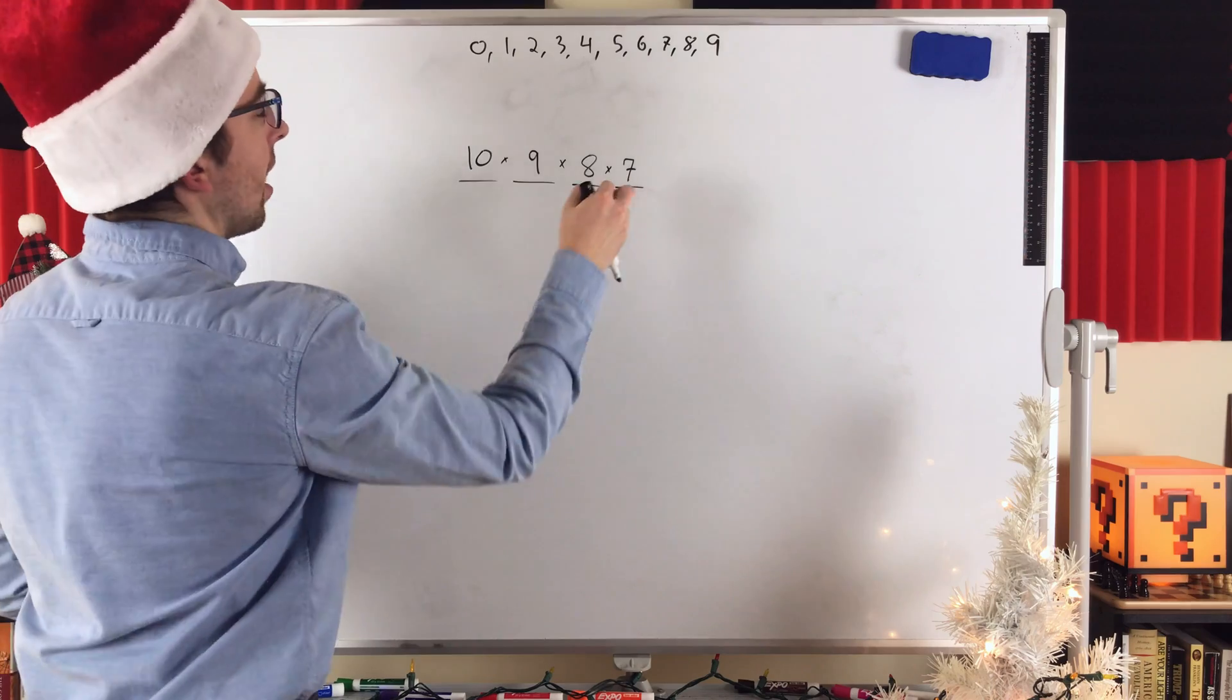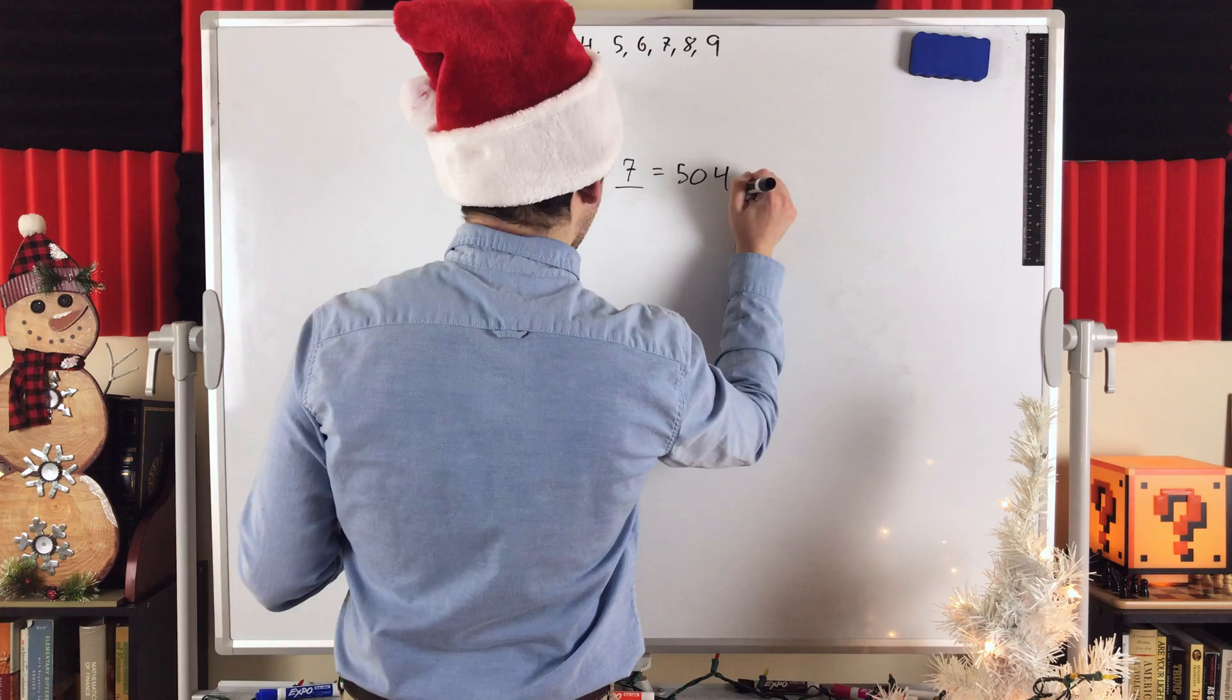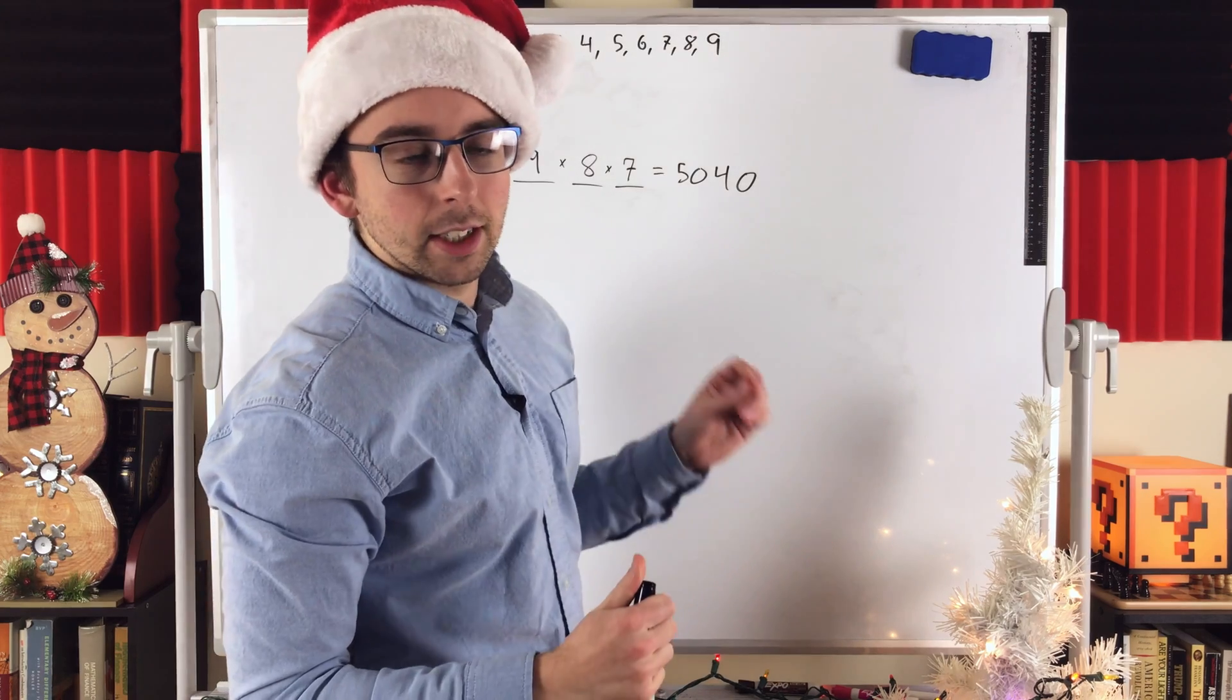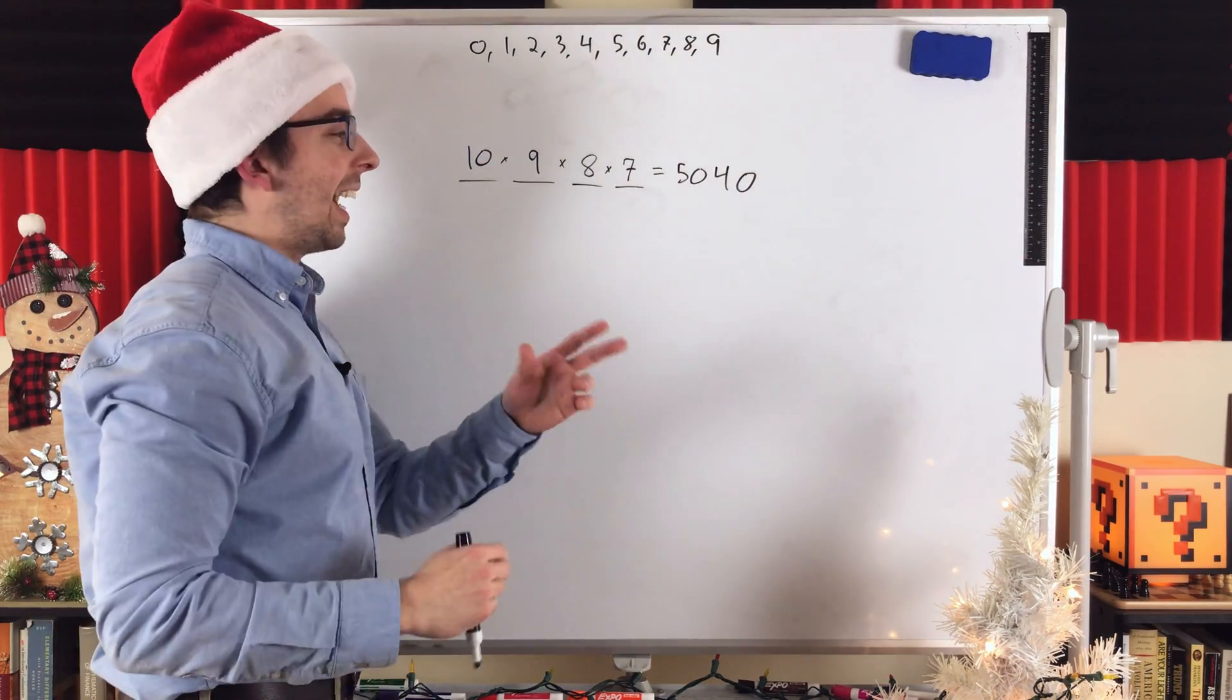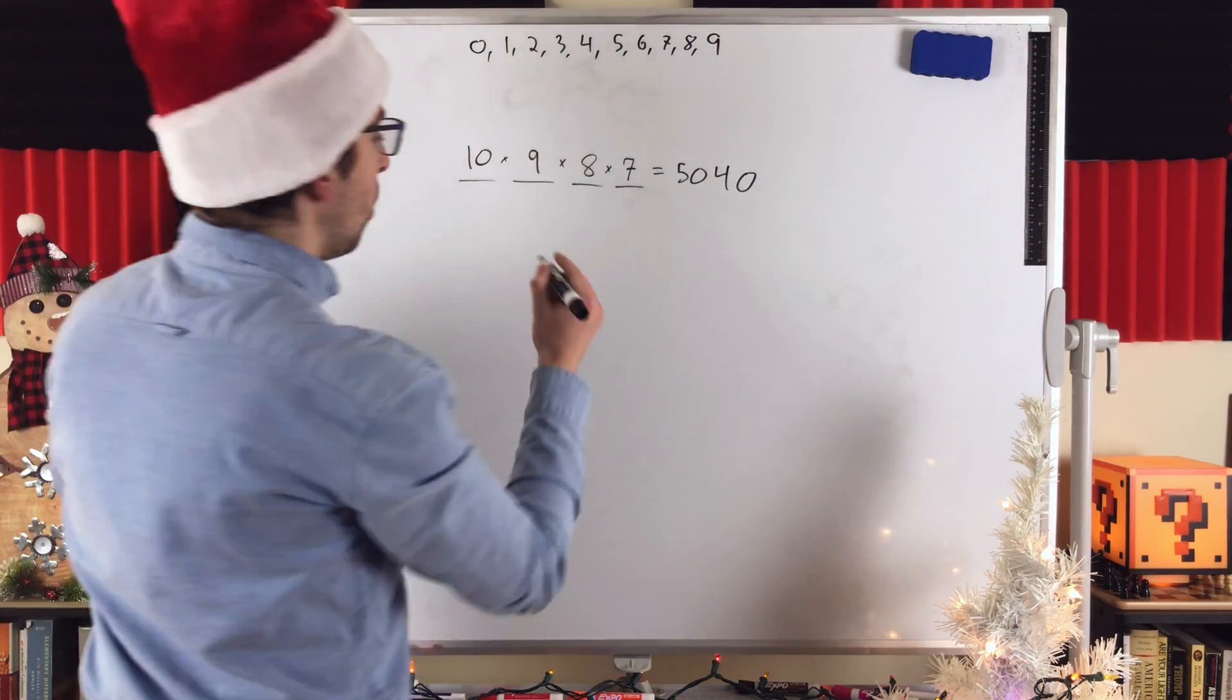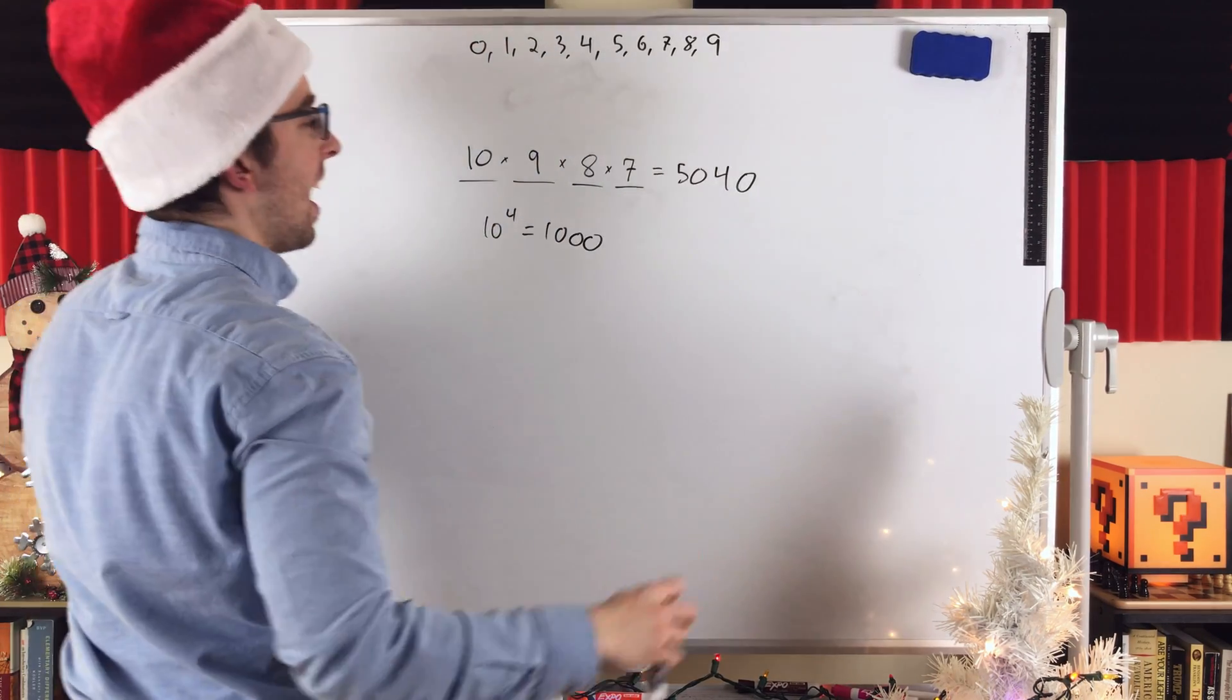720 times 7 is 5,040. So, a total of 5,040 possible 4-digit codes using the digits 0 through 9 and not allowing repetition. And in this case, this turned out to be a little more than half of the total number of codes that could be created when we did allow repetition, which you might remember was 10 to the power of 4 or 10,000. So, this is a little bit more than half of that.